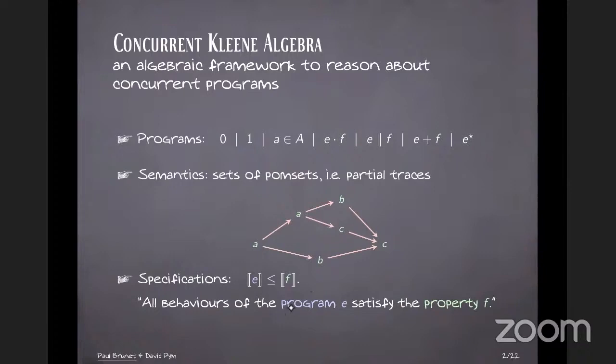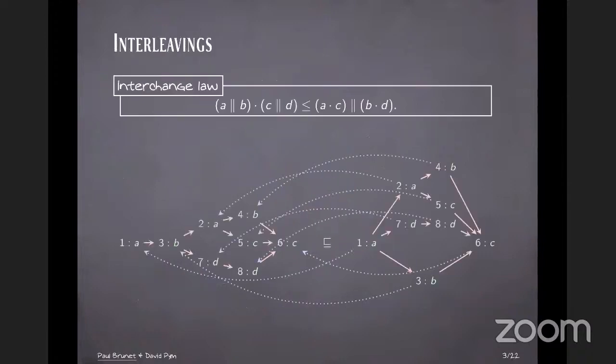But this way of writing specification can be restrictive sometimes because there are properties that don't exactly match the programs you can write. And then there's a second limitation, which I'm going to talk about right now, which is the way concurrent Kleene algebra deals with interleavings. So if you want to have some notion of interleavings in CKA, you add axiomatically the interchange law, sometimes called weak exchange law, which I wrote here.